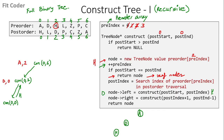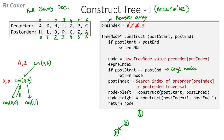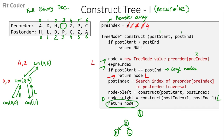construct(0, 0) creates a new node H, increments pre-index to 3, and since start equals end, returns H. So left of D becomes H. Then for the right of D, we call construct(1, 1). This creates a node L, increments pre-index to 4, and since start equals end, returns L. So right of D becomes L. The function call for D terminates and returns D. Control goes back to construct(0, 6) for A, and left of A becomes D.